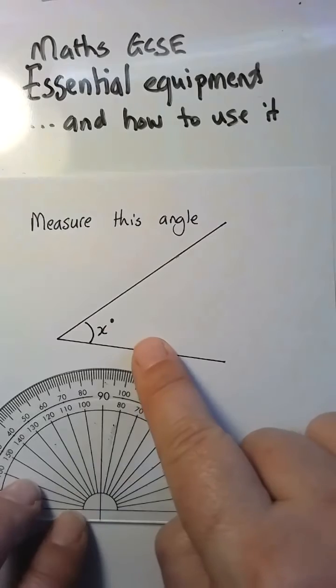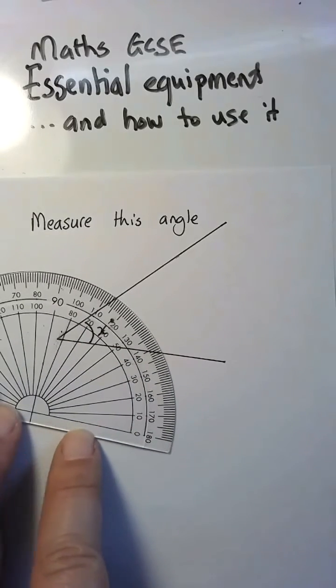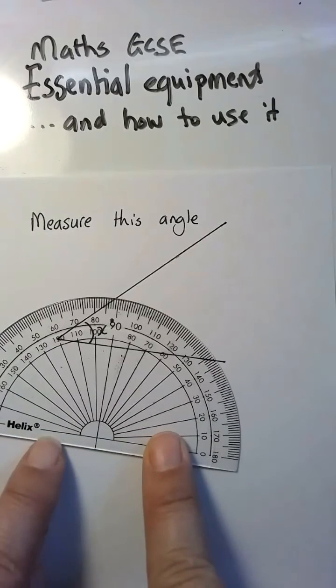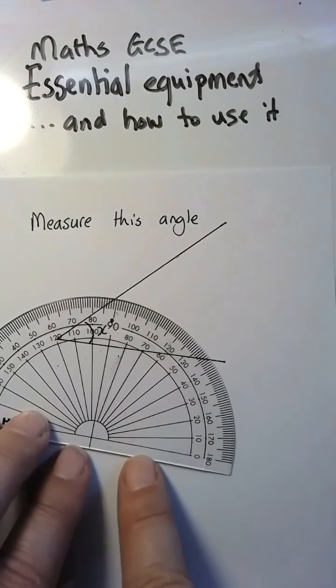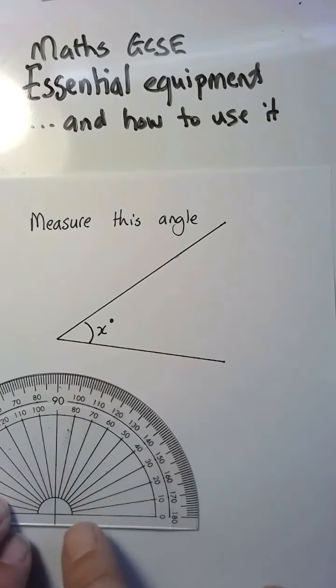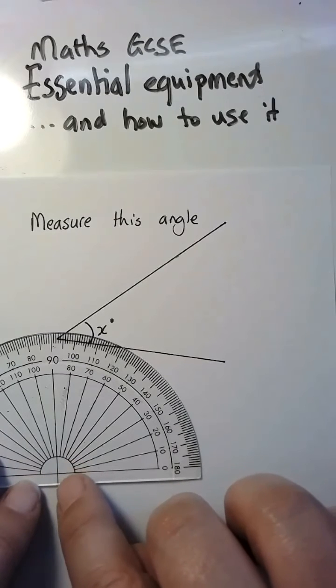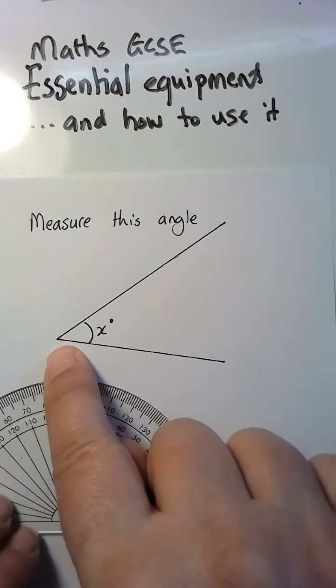So the way that we measure this angle is we have to make sure that this line here, or this line here, but in this case it's going to be this side, has to be level with exactly this line, and this crosshair here, where these two lines cross, this has to be exactly on this dot here.